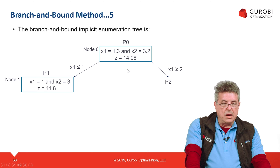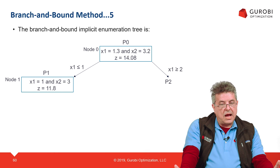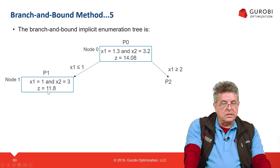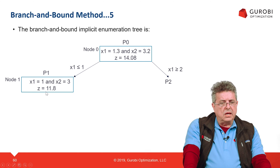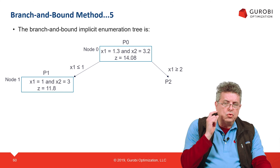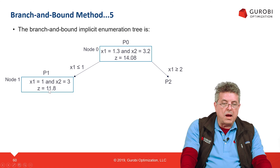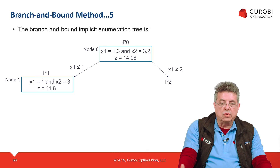Let's solve P1, generating node 1. We found an integral solution: x1 equal to 1 and x2 equal to 3, with an optimal objective function value of 11.8. Since this is an integral solution, this value of 11.8 becomes a lower bound to the optimal solution of the original MIP problem — because it is possible that P2 might contain a better integral solution. We don't know yet, so 11.8 is the best integral solution found so far.